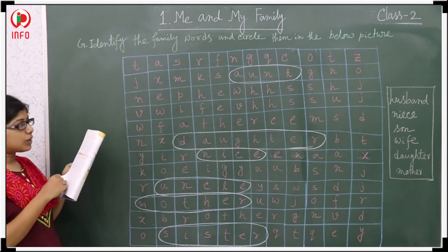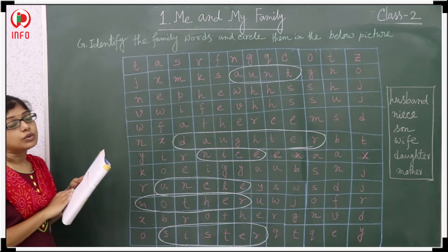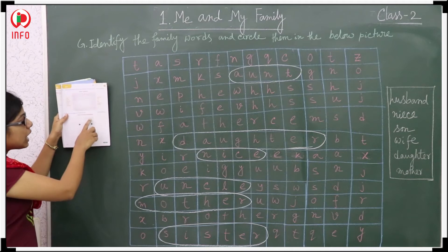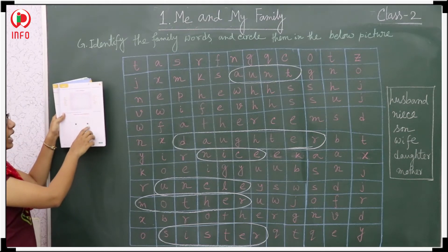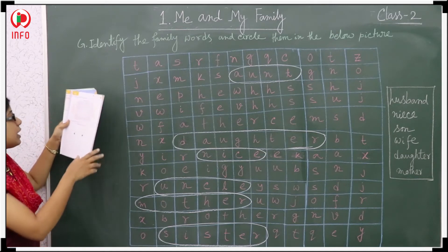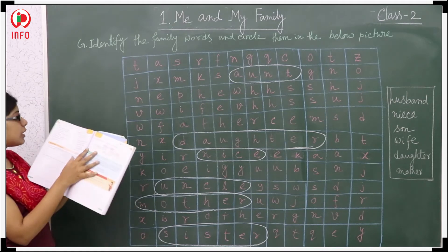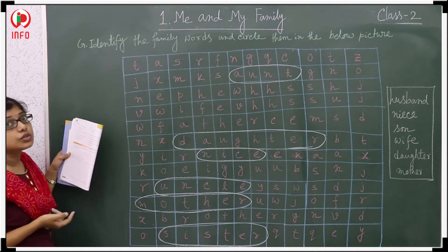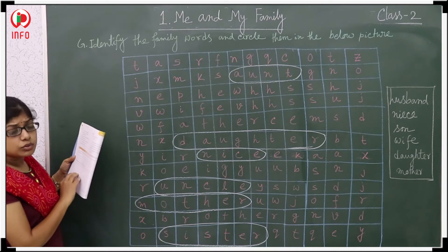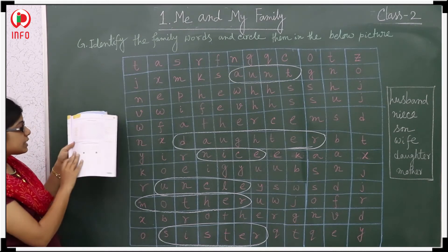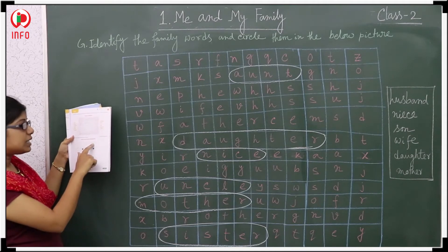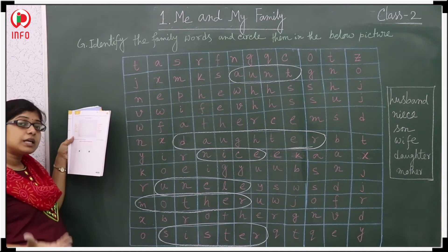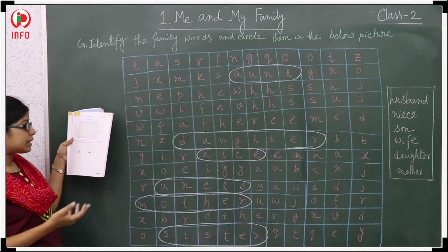So let's start with the first one. First one: your mother's son. Your mother's son definitely should be a sister. See here I wrote sister — S-I-S-T-E-R. So the last letter R of sister is including the second letter of brother. So like this you have to fill.